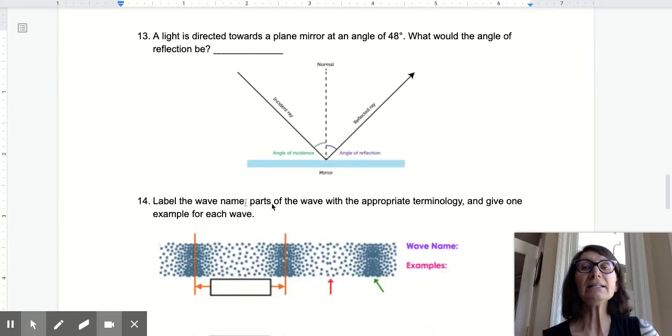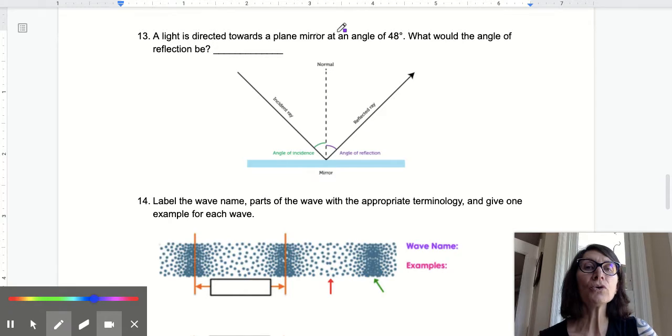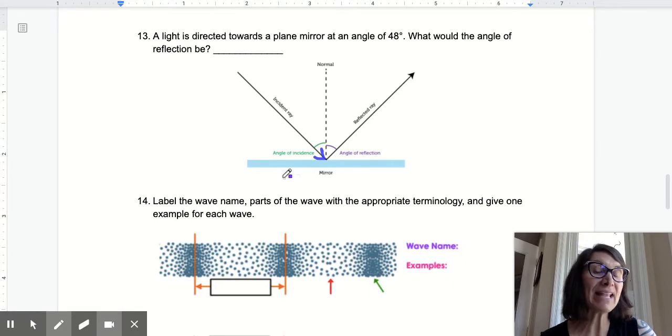Number 13, a light is directed towards a plane mirror. So I have my incident ray and it's coming in on a plane, a flat mirrored surface at 48 degrees. My angle of incidence is 48. What would my angle for reflection be? 48. It's a flat surface. The angle of incidence on a flat surface is equal to the angle of reflection.